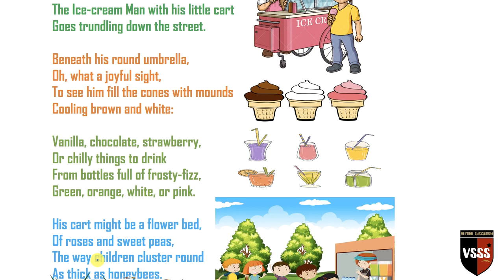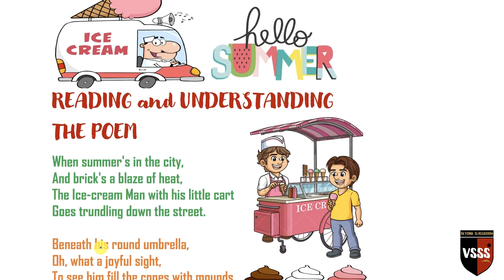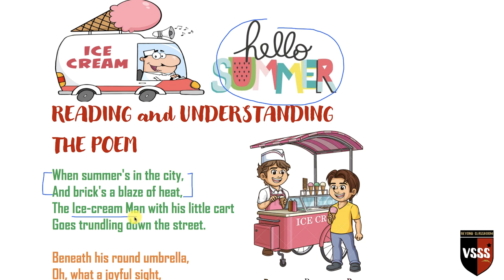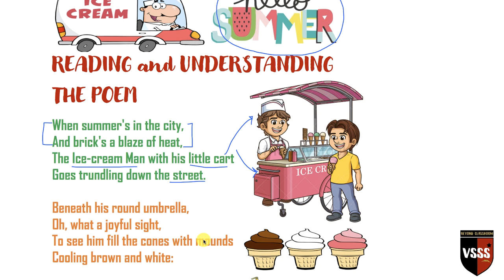This is a very short poem of just four stanzas. Let's understand what the poem is all about. 'When summer's in the city and breaks a blaze of heat' — whenever the summer season comes and everything becomes warm, 'the ice cream man with his little cart goes trundling down the street.' The ice cream man with his little cart — as you can see in the picture — goes slowly and heavily around the street so that he can give children ice cream, and not just children, the elders ate it too.